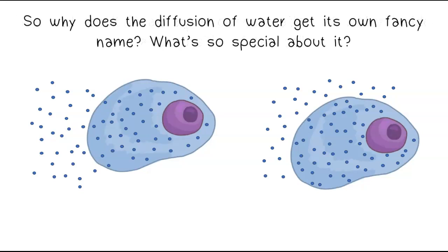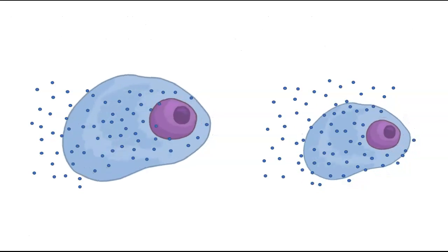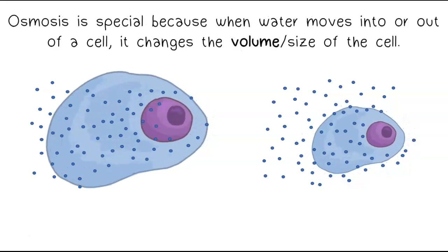So why does the diffusion of water get its own fancy name? What's so special about it? Osmosis is special because when water moves into or out of a cell, it changes the volume or size of the cell.